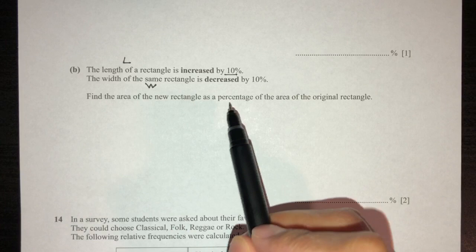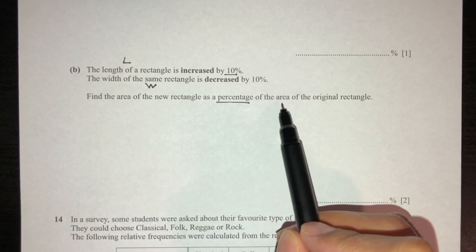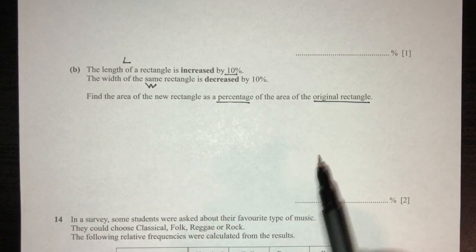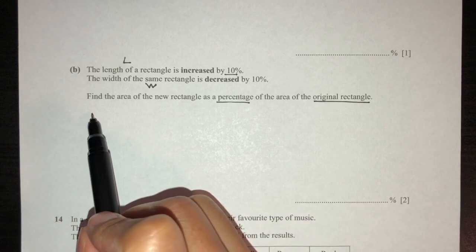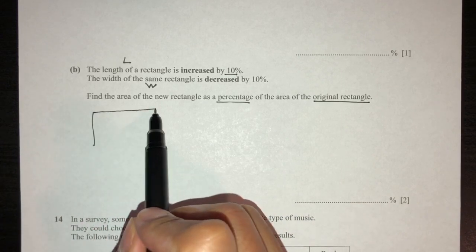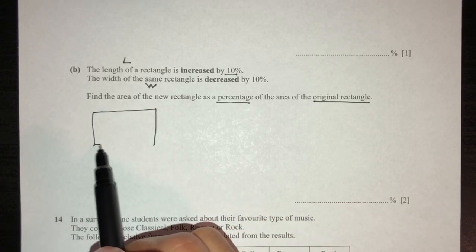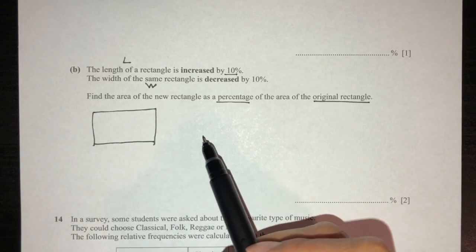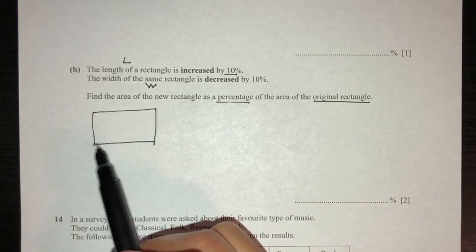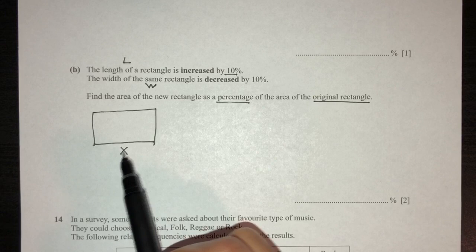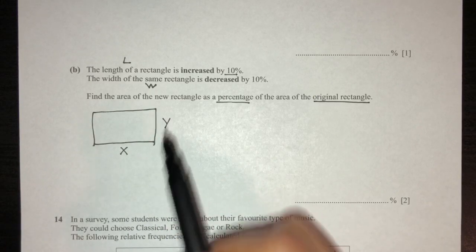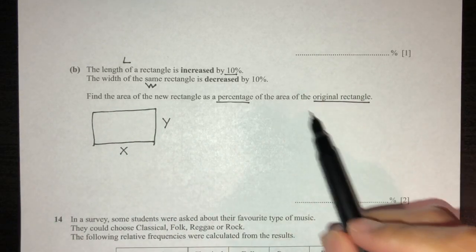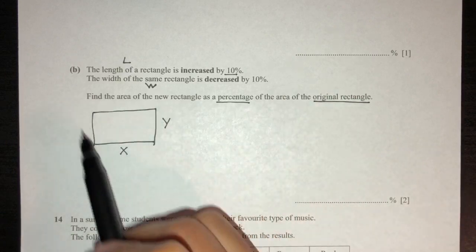The question asks: find the area of the new rectangle as a percentage of the area of the original rectangle. For example, let's say this is our original rectangle. We don't know what the length and width are, so let's call the length x and the width y. This is the initial rectangle.